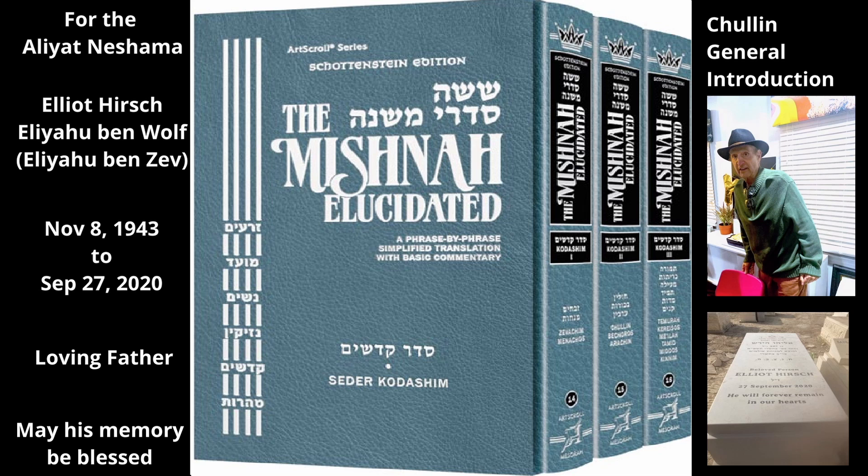This tractate was originally known as Shechitat Chulin, the Shechita of Ordinary Animals. That name drew a contrast between this tractate and the first tractate of Seder Kedoshim, i.e., Tractate Zevachim, which used to be called Shechitat Kedoshim, the slaughter of consecrated animals. Over time, however, these tractates became known as Chulin and Zevachim, respectively.